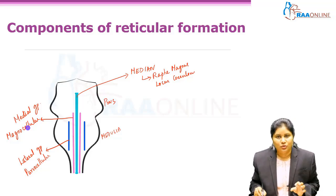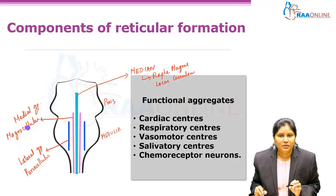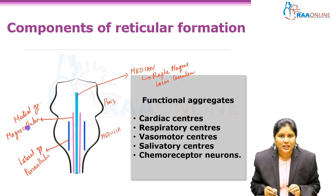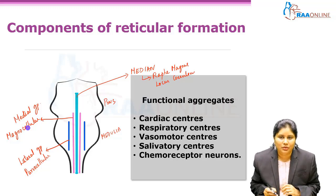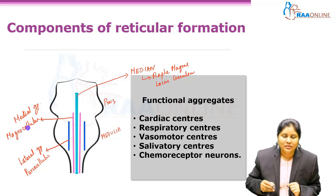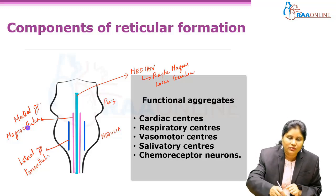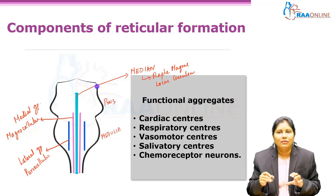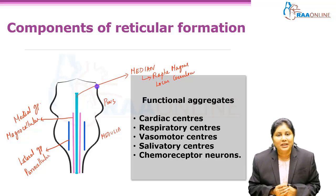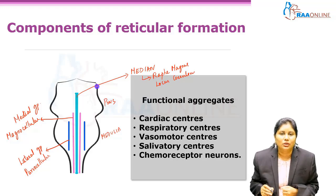Apart from these delineated nuclei, there are some neurons responsible for maintaining cardiac function, called cardiac centers. We have got respiratory centers in the medulla, vasomotor centers in the medulla, salivatory centers in the medulla, and chemoreceptor neurons present in the medulla. These are all functional aggregates — these neurons don't fit into any anatomical aggregates but have functional similarity, so they are called functional aggregates and also belong to the reticular formation.